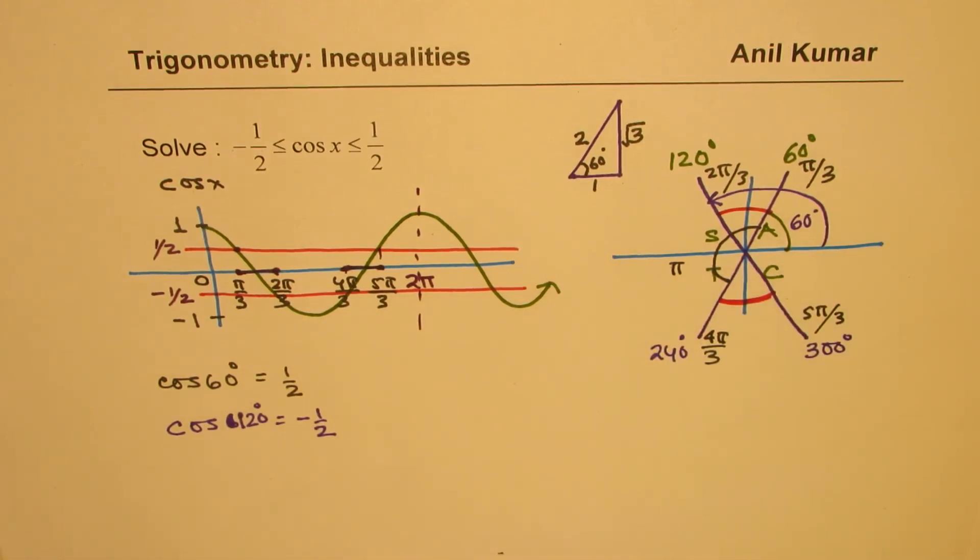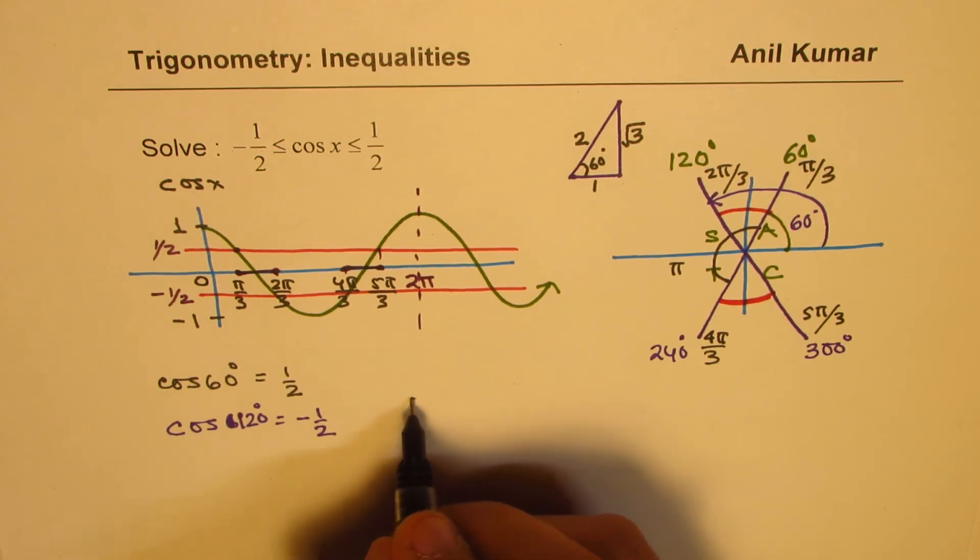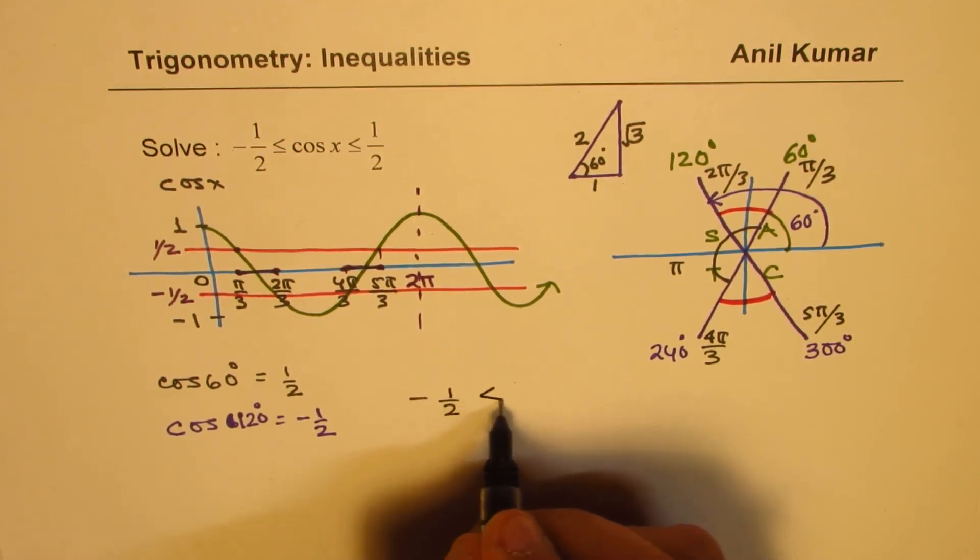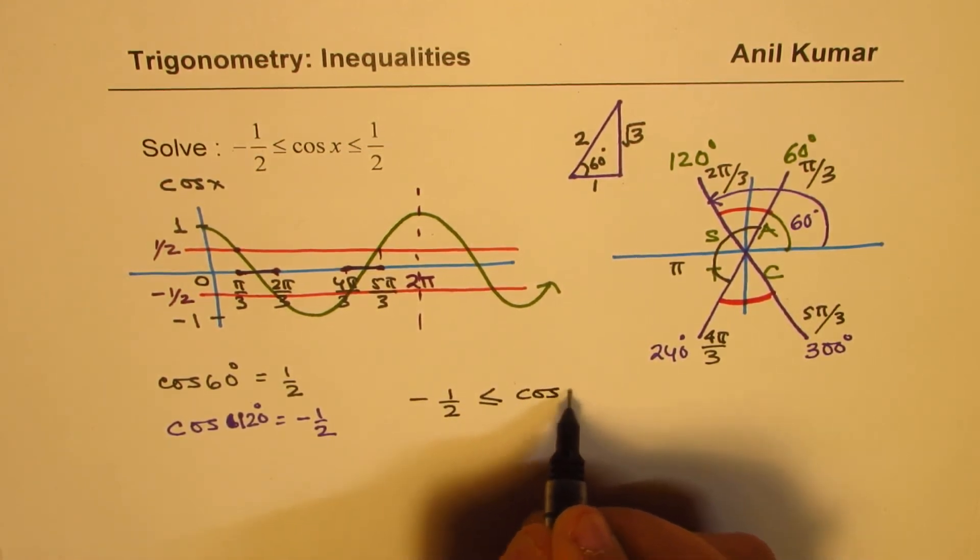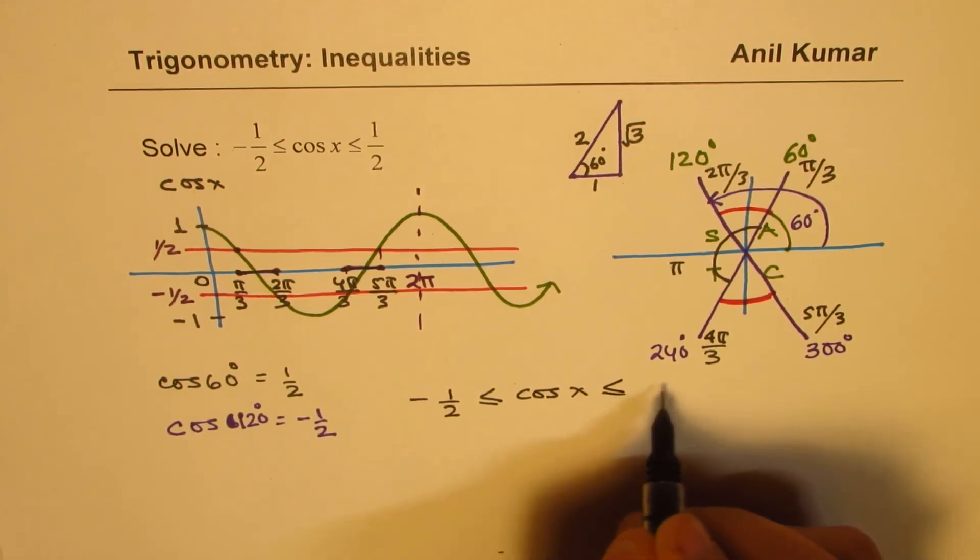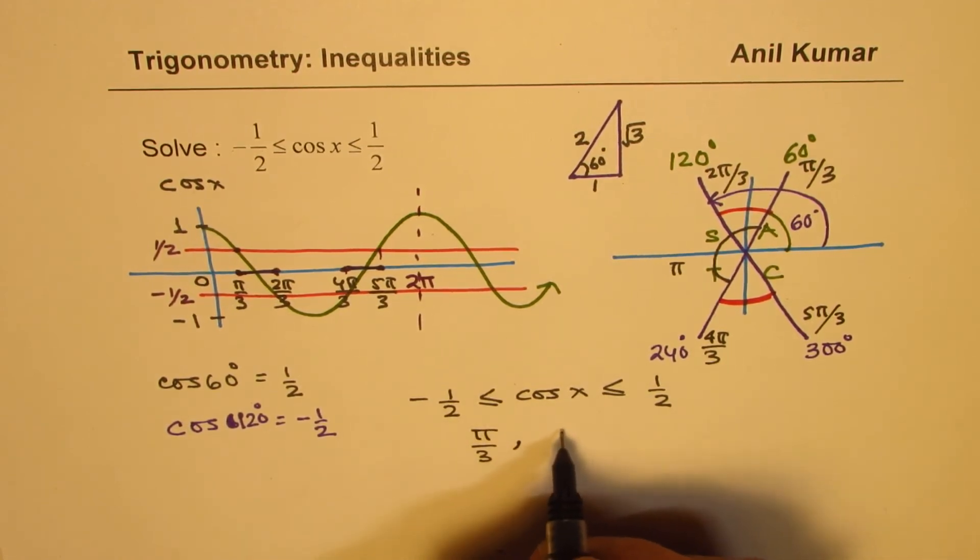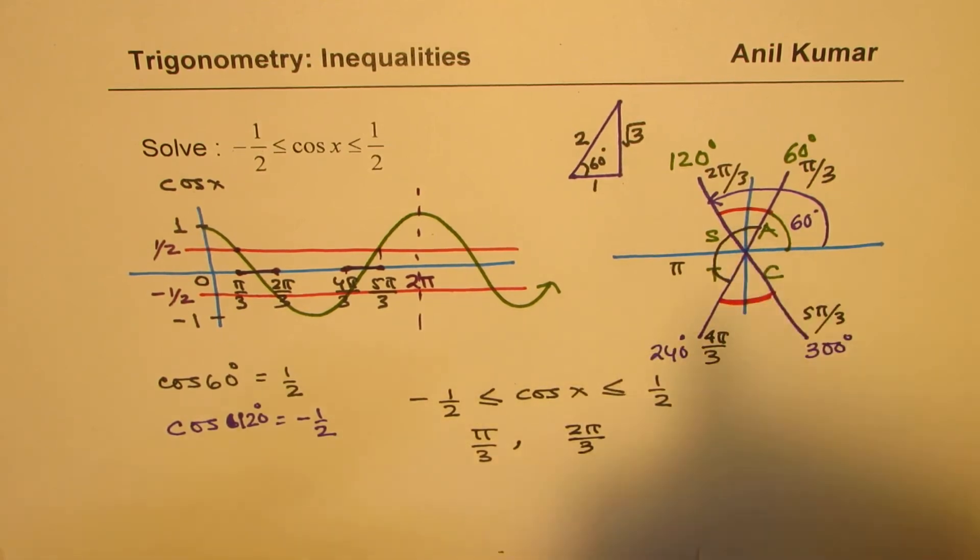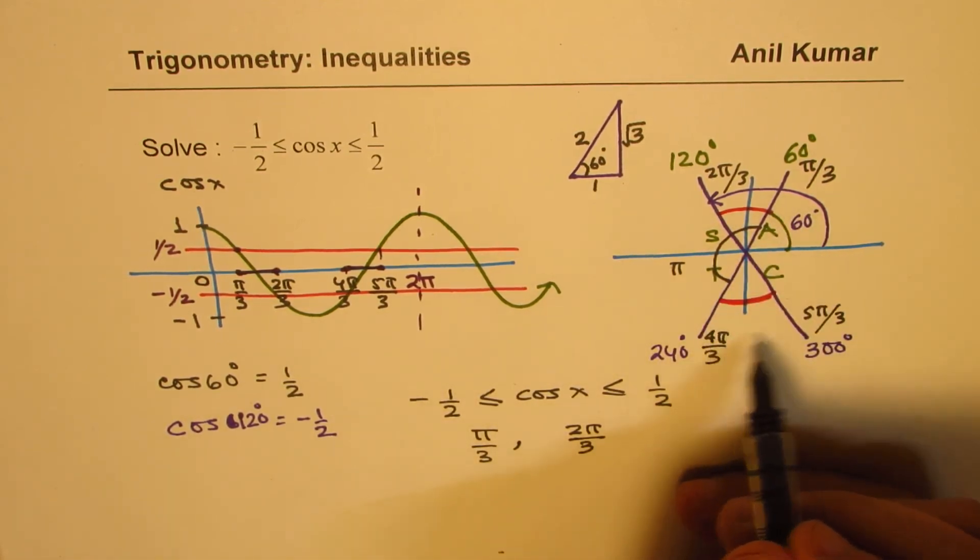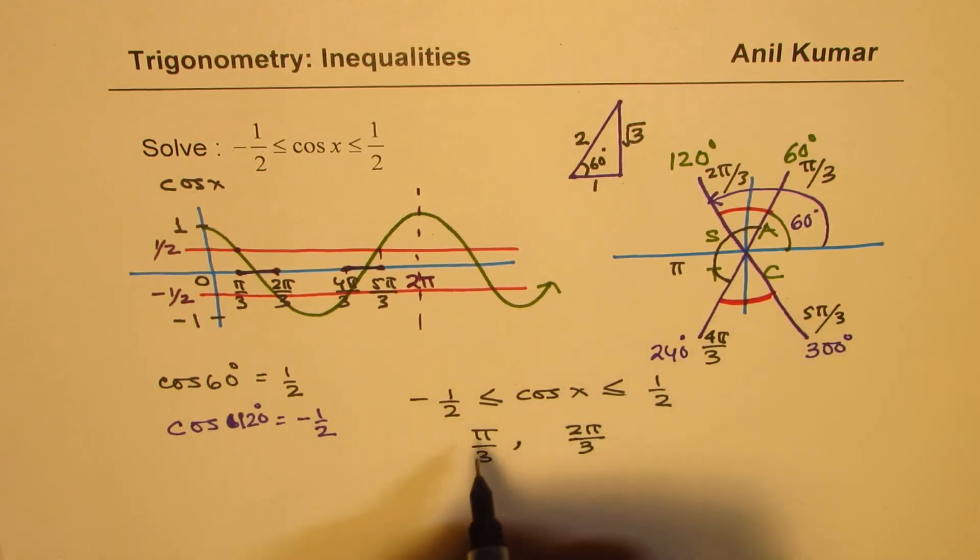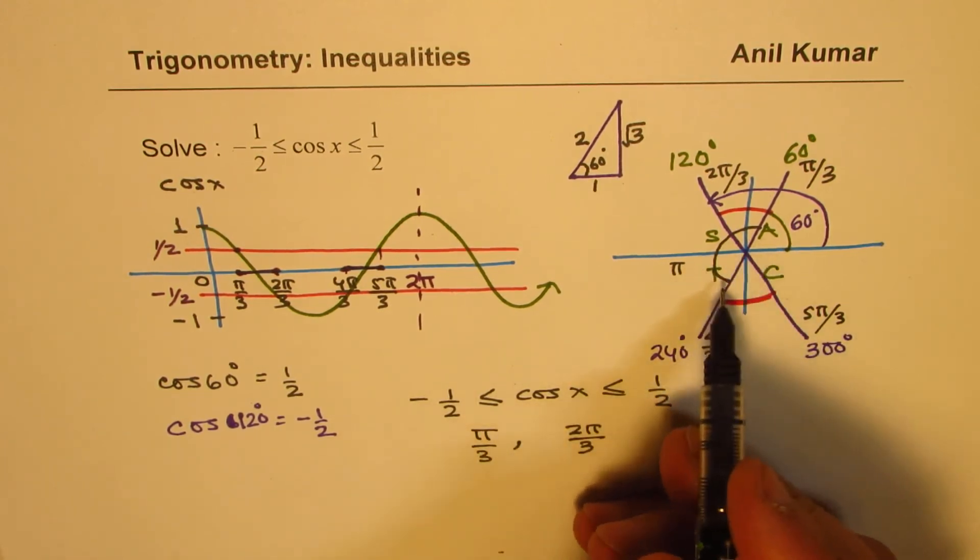Now what we observe is that it repeats after π or 180 degrees. Do you see that? So we could provide a general solution to this. That is to say that the cosine value is between plus and minus half for the angle which is π/3 to 2π/3.